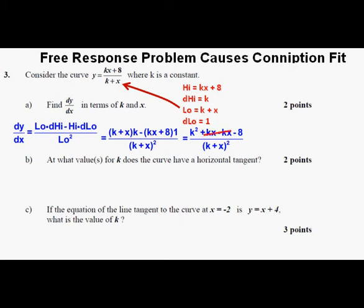Next, kx minus kx cancel each other to equal 0 in the numerator, and we're left with dy/dx equals (k squared minus 8) over (k plus x) squared, which we box in as our correct answer to Part A.